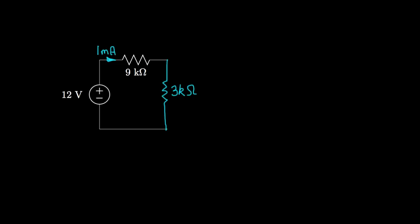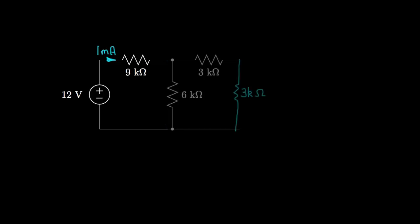Now we can recreate the circuit. We'll take that 3-kilohm equivalent resistor out of the circuit and put back in this segment, which will allow us to determine the current that flows through the 3-kilohm resistor and the 6-kilohm resistor.